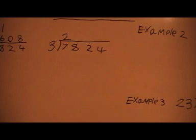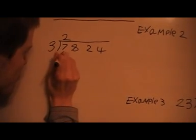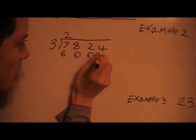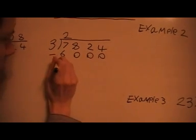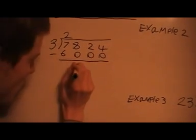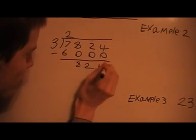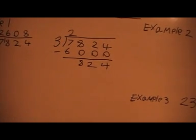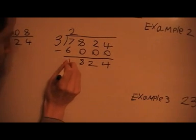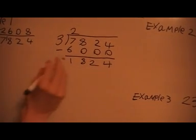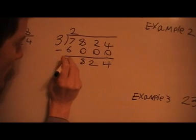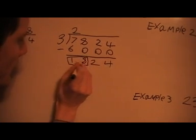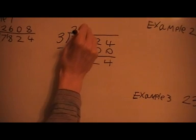So I've got 3 times 2,000, so that's going to be 6,000. And I'm going to subtract that, I'll get 824. 3 into 8, 18 actually, 3 into 18 goes 6, and there's no remainder.